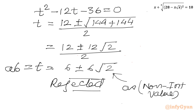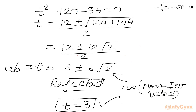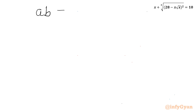The solution we accept is t equal to 3. So ab is equal to t equal to 3.